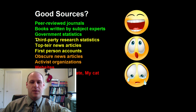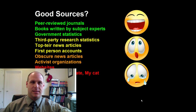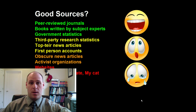From there, we kind of move on to the next zone, which is pretty good but not as good as the green zone — the ones highlighted in yellow. Here we talk about sites such as third-party research statistics. There are a lot of private organizations that do both quantitative and qualitative data research and publish their statistics online. Still pretty good, maybe not quite as good as some of the others, but still decent sources.